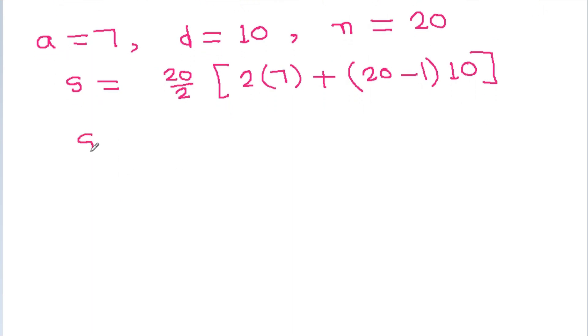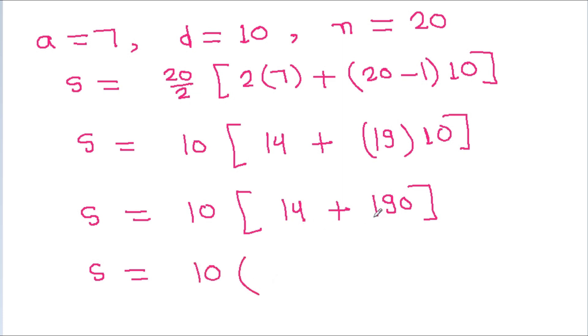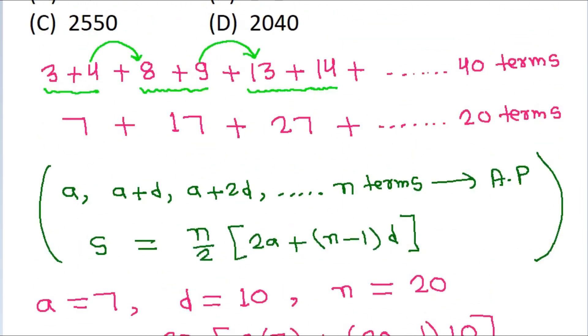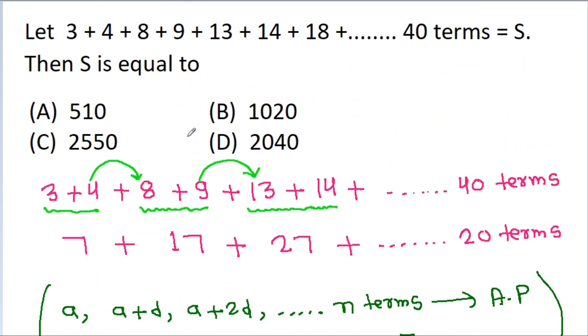And it is S is equal to 10 times 14 plus 19 times 10 is 190, which gives S is equal to 10 times 14 plus 190 will be 204, and it is 2040. So the correct option is option D.